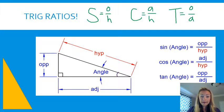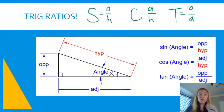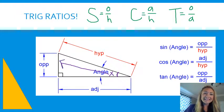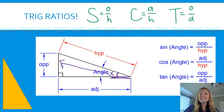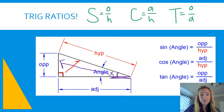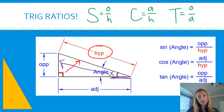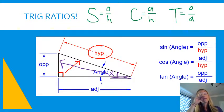Looking at this triangle, if we're talking about this purple angle — we'll call it angle X — then the opposite leg of the angle is your O, or opposite side, for your trig ratio. The leg that's touching the angle becomes your adjacent leg. The side across from the 90-degree angle is always your hypotenuse. The hypotenuse never changes, but depending on which angle you're referring to, the adjacent and opposite legs can change.